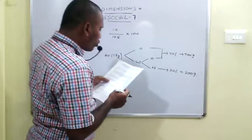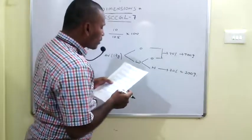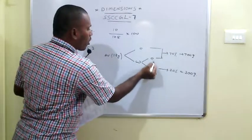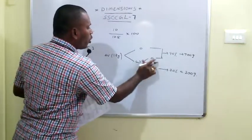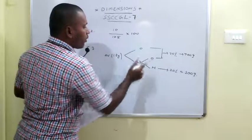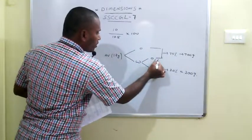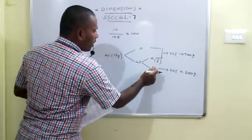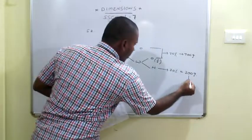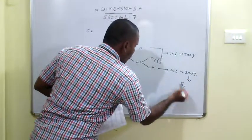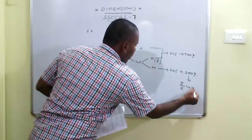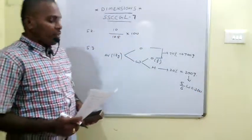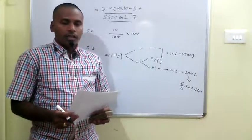Water vapour contains 16.66% oxygen, which means 1/6th oxygen, so hydrogen is 5/6th. Therefore, this 300 grams of hydrogen equals 5/6 of the total water vapour quantity. On simplification, water vapour equals 360 grams, so the answer is 0.36 kg.